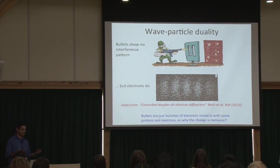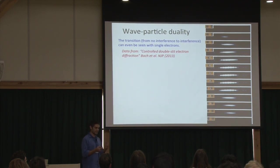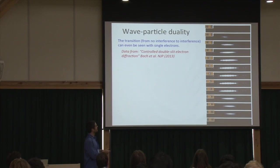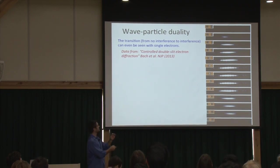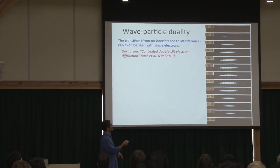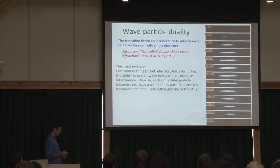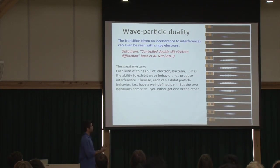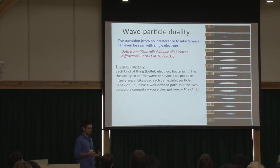Of course, bullets are just bunches of electrons similar to some other particles, so why is there a change in behavior? We now know that even with electrons you can see this transition between interference and no interference. In this experimental paper they dragged a mask across the double slit: with both slits exposed you see interference; as the mask partially covers one slit, interference starts to disappear; with only one slit exposed, interference vanishes entirely. So everything — whether an electron, a bullet, or a bacterium — has the possibility of exhibiting wave behavior, and likewise each can exhibit particle behavior with a well-defined path.